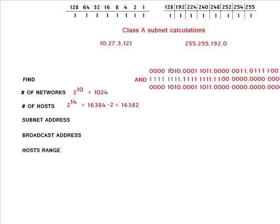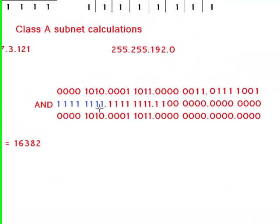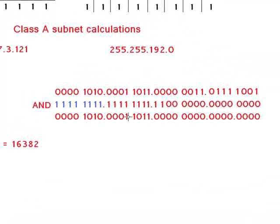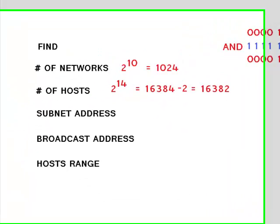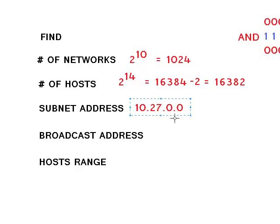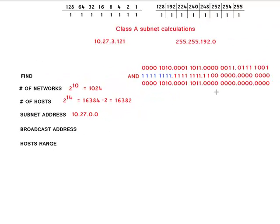So every time you see a 1, you carry 1 over. There is a 1 over, 1, 1, and 1. So when you convert this IP address to decimal, it'll give you this: 10.27.0.0. You can see this is a 0 and 0.